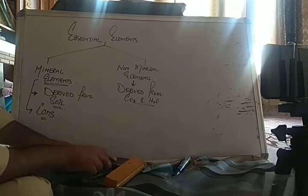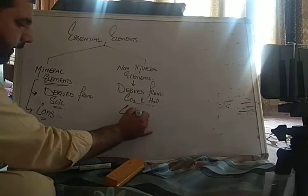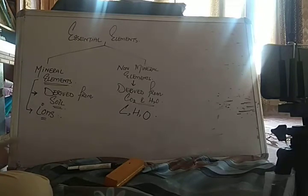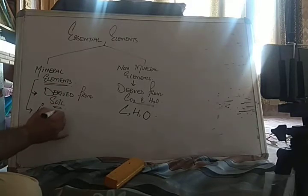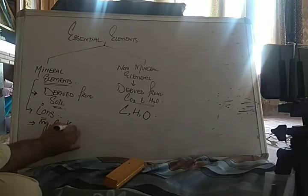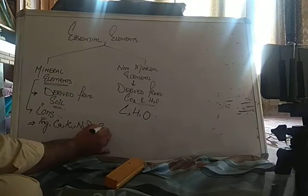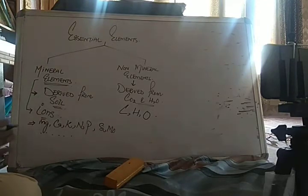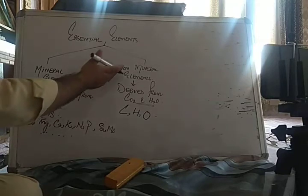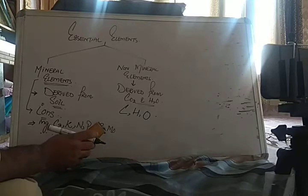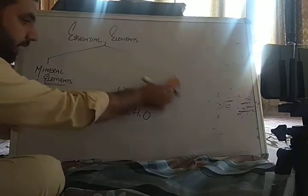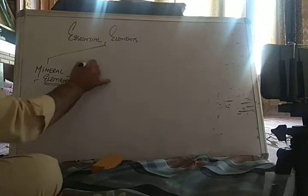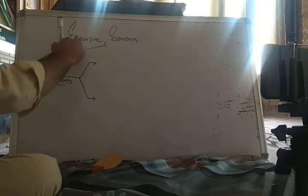Non-mineral elements are those essential elements derived from carbon dioxide and water — these include carbon, hydrogen, and oxygen. Mineral elements, derived from soil, include magnesium, calcium, potassium, nitrogen, phosphorus, silicon, molybdenum, and so on. Non-mineral elements come from water or CO₂, not from soil.